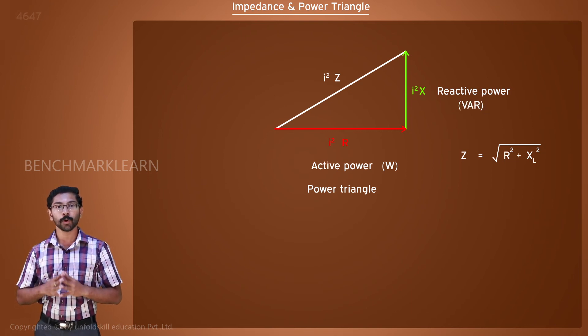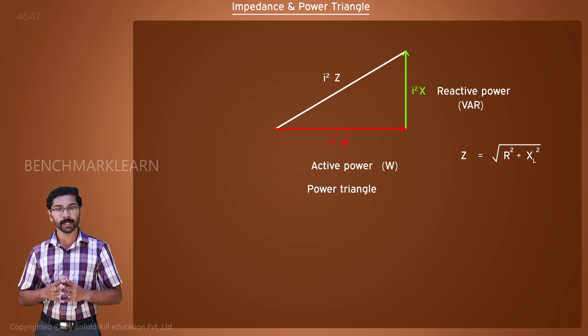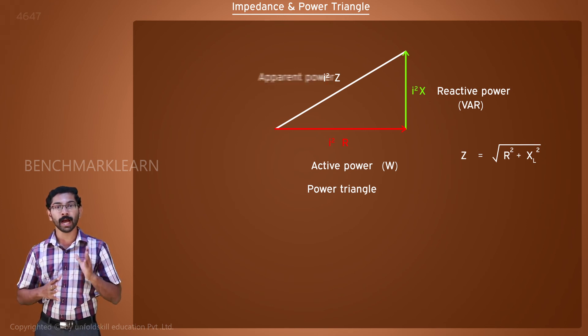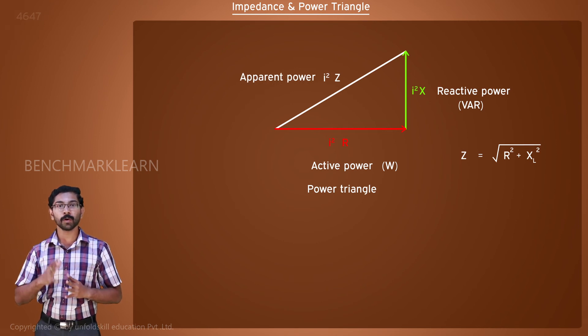The product of total applied voltage and current through the circuit gives the power in a DC circuit. But in an AC circuit, this product is known as the apparent power of the circuit. Why is this called the apparent power?